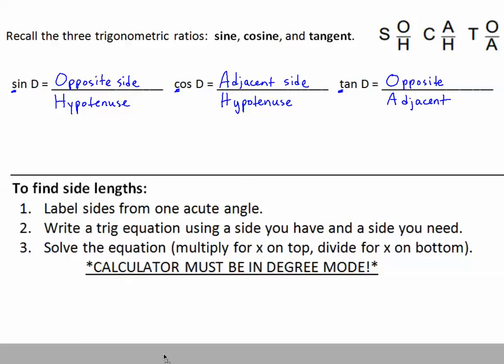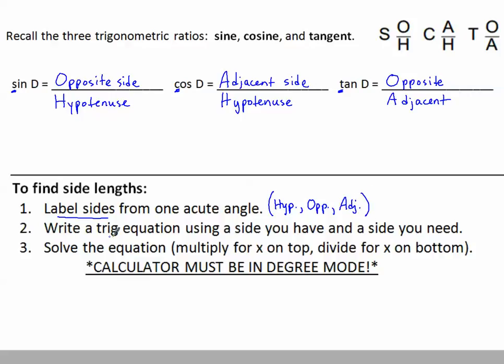Now we're going to apply it to finding side lengths. To find side lengths, we've got these three steps. First, label the sides from one acute angle. Remember when we say label the sides, we mean hypotenuse, opposite, and adjacent. Then, write a trig equation using a side you have and a side you need. We'll see how to do that in the examples to come. Finally, we'll solve the equation, making sure that our calculator is in degree mode. That's very important.